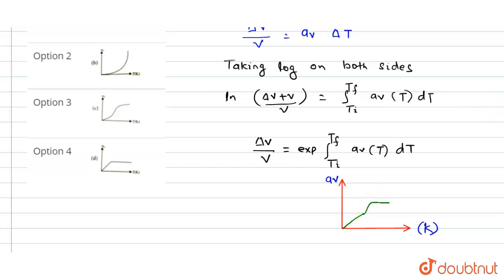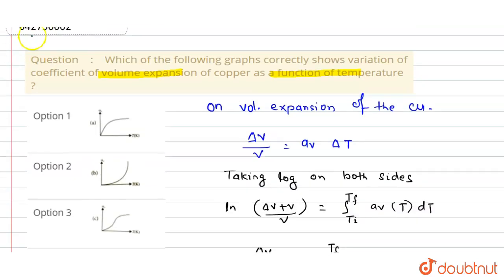Now we check this option. Option first shows that the graph is increasing and this is not linear, so option first is wrong. In the second option, this graph is increasing and not linear and not constant. So option second is wrong.